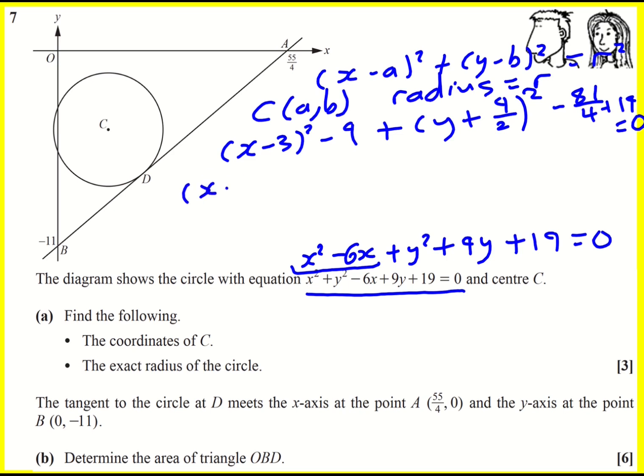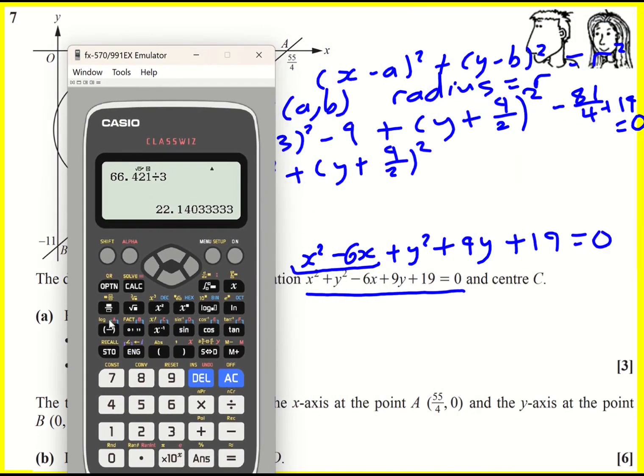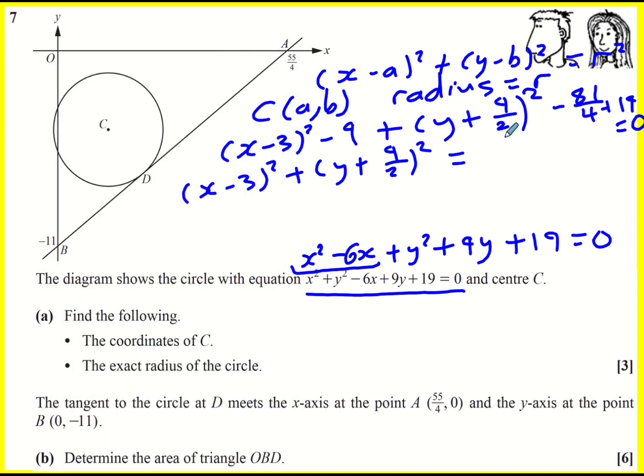We're nearly there actually. x minus 3 squared plus y plus 9 over 2 squared—probably easiest to put it over common denominator, but it's going to be minus 9 minus 81 over 4 plus 19. 40 minus 41 over 4, but when I put it on the other side that's going to equal 41 over 4, or root 41 over 2 all squared.